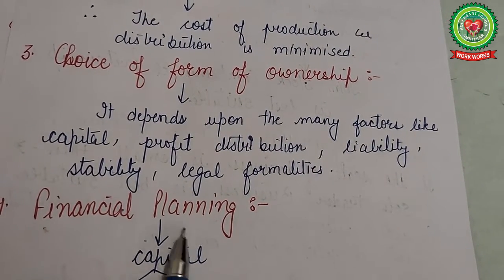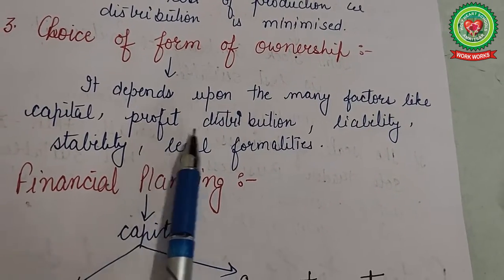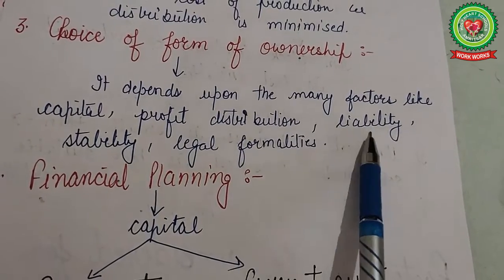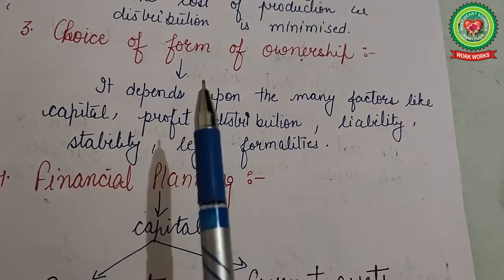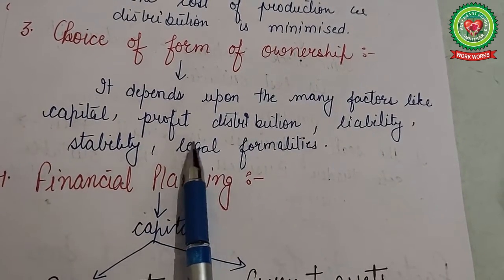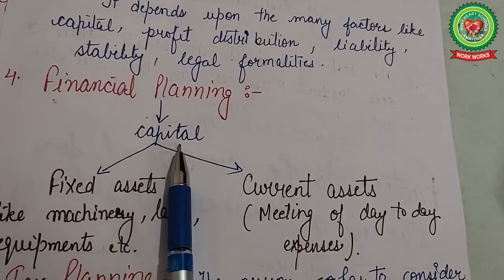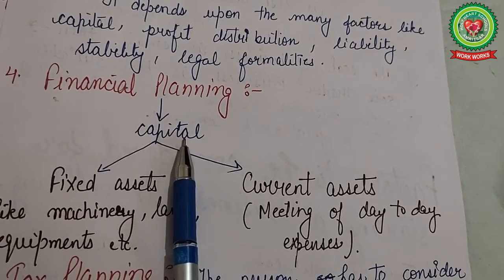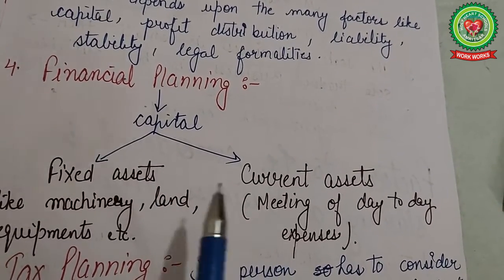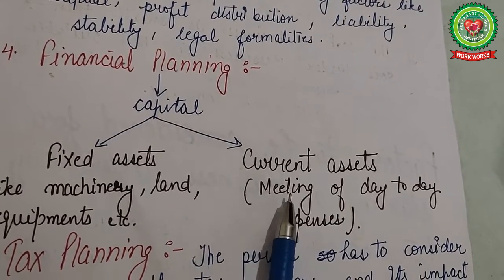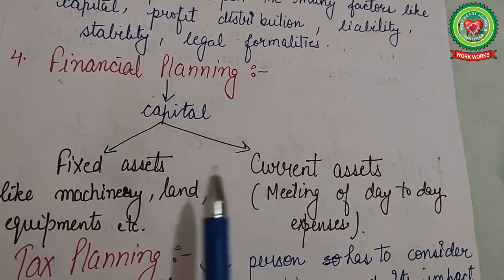The next factor is choice of form of ownership. The businessman may choose sole proprietorship, partnership, or a joint stock company, depending on factors like capital, profit distribution, liability, stability, and legal formalities — analyzed by weighing the merits and demerits of each. Financial planning depends on the capital required for investment in fixed assets like machinery, land, and equipment, as well as current assets and day-to-day expenses.